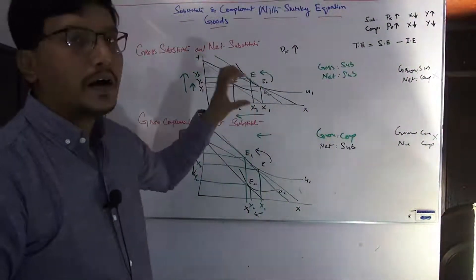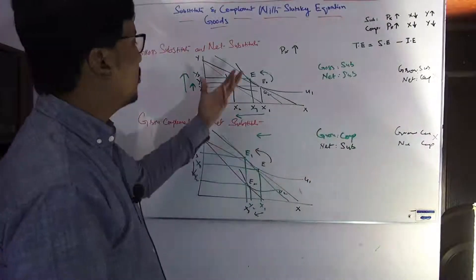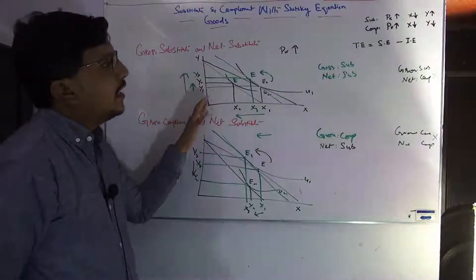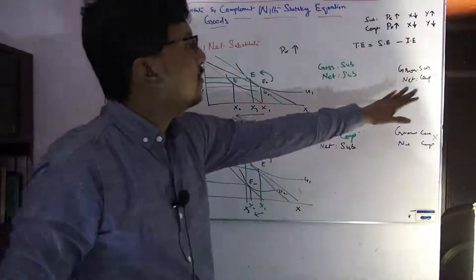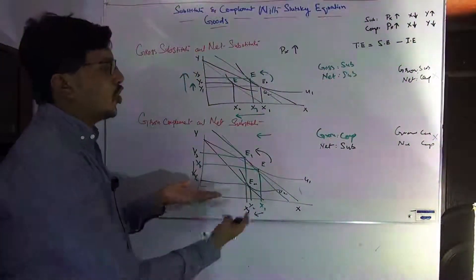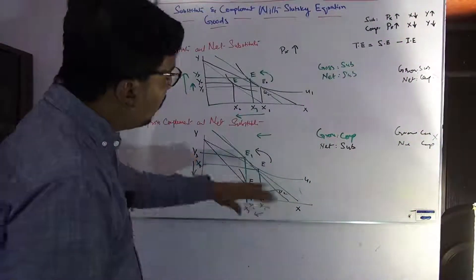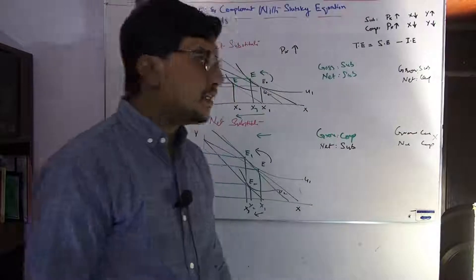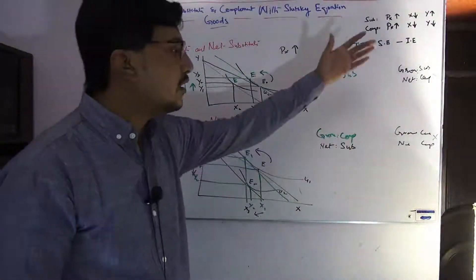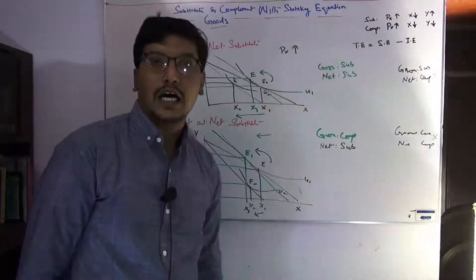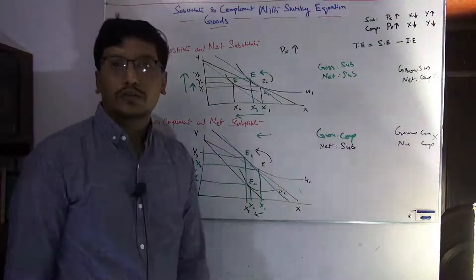Only two cases are possible because you cannot draw these cases on a graph — that is why they are not possible. This is your assignment: you can try to draw these two graphs following the same method used in the previous two graphs and verify yourself whether these cases are practically possible or not. This is a very important justification of substitute and complement goods using the Slutsky equation. I hope you learned from this video. Please subscribe to our channel for more economics and statistics videos. Thank you.